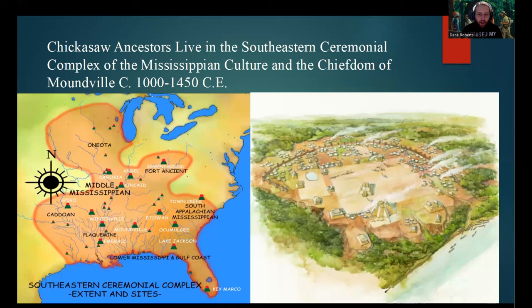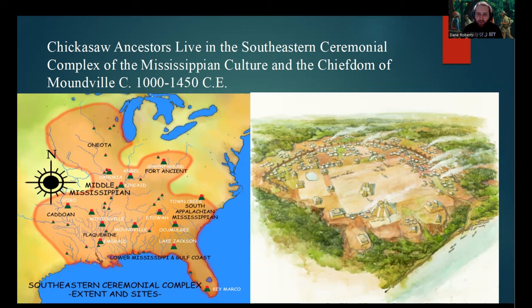From Cahokia, Mississippi culture would spread throughout the eastern woodlands and into the western part of what is now Alabama, where the ancestors of various different Native American groups — including but not only the Chickasaw — would eventually create their own metropolis: the Moundville chiefdom. Moundville had a population of around 16,000 to 20,000 people, which still rivaled, if not exceeded, European cities like York, England.